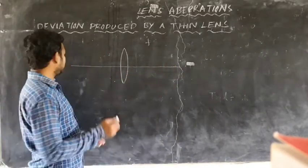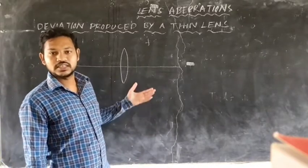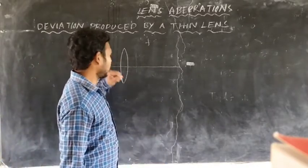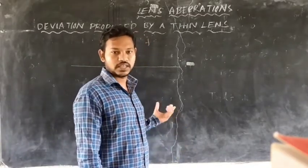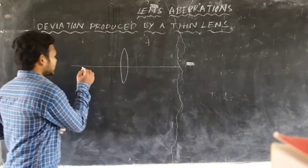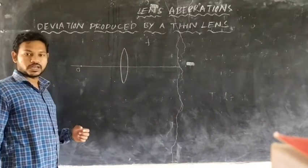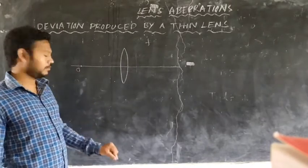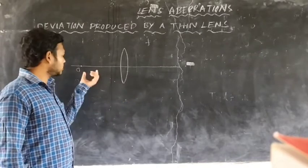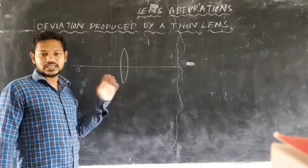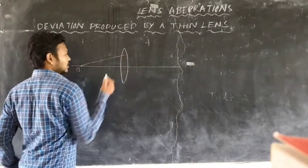What is the principal axis? The line that passes through the center of curvature of the lens is known as the principal axis of the lens. Let us take a point object on the principal axis. The O-A ray is incident on the lens.